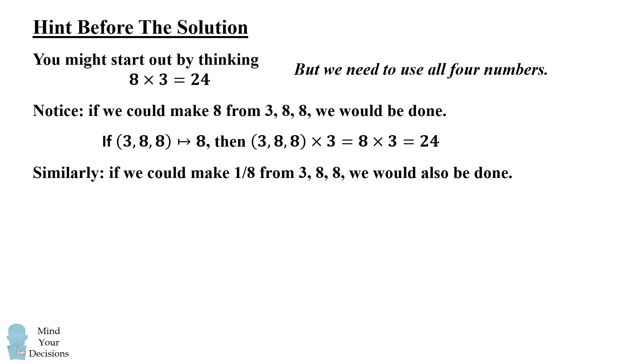Now similarly, if you could take 3, 8, and 8 and combine them to make 1/8, you would also be done. This is because we could then do 3 divided by 1/8, and that would also equal 24.